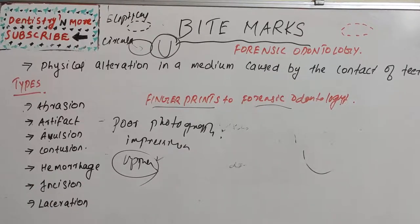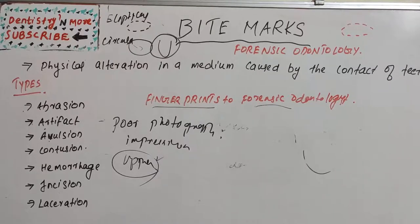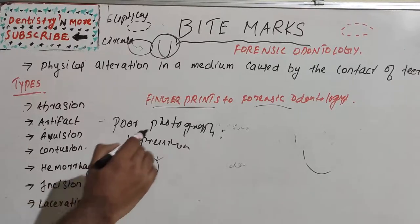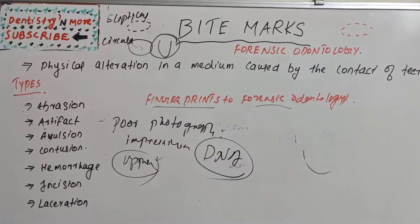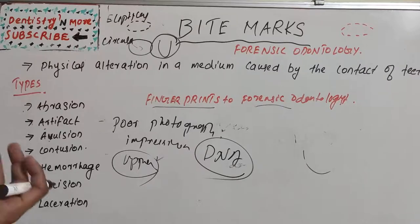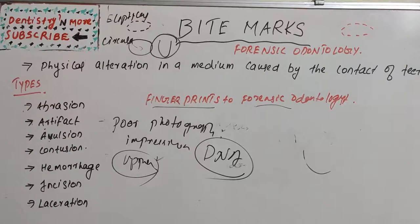The first step in analyzing the bite is to identify it as human, since animal teeth are very different and leave very different bite mark patterns. Next, the bite is swabbed for DNA analysis, because there is definitely a presence of saliva at the injured site, which can be collected with a swab for DNA identification.